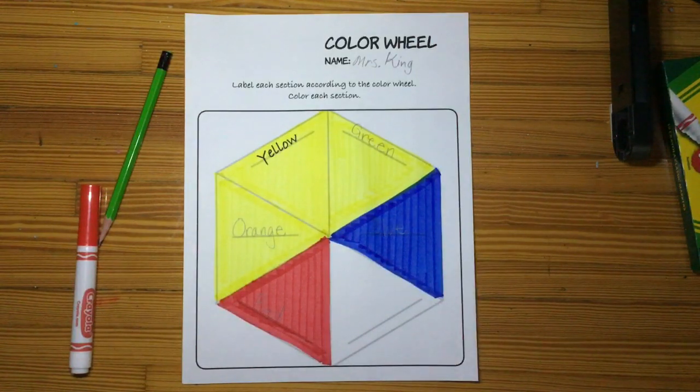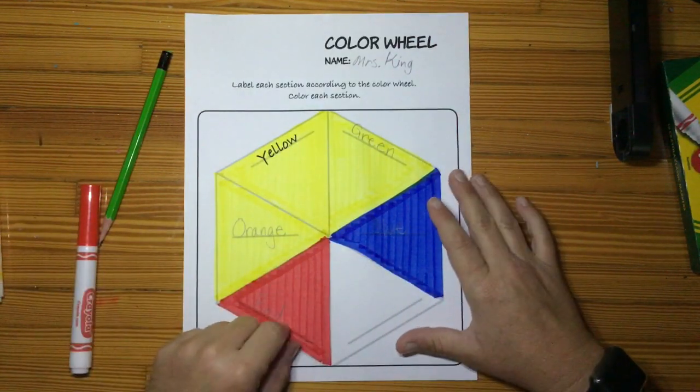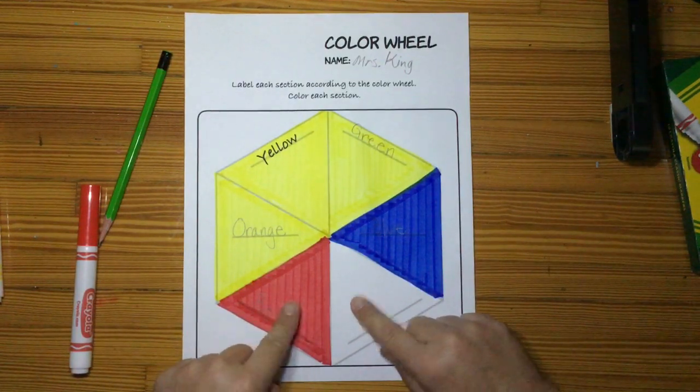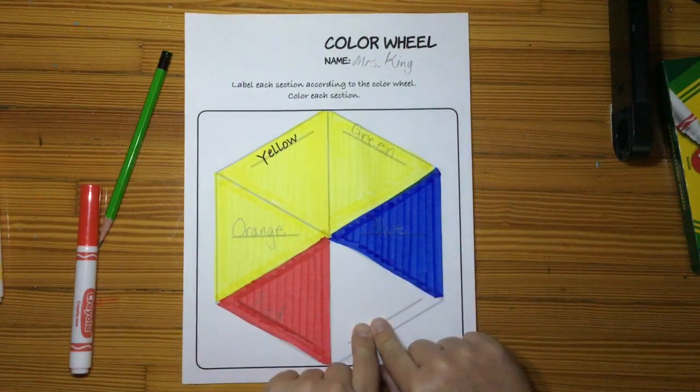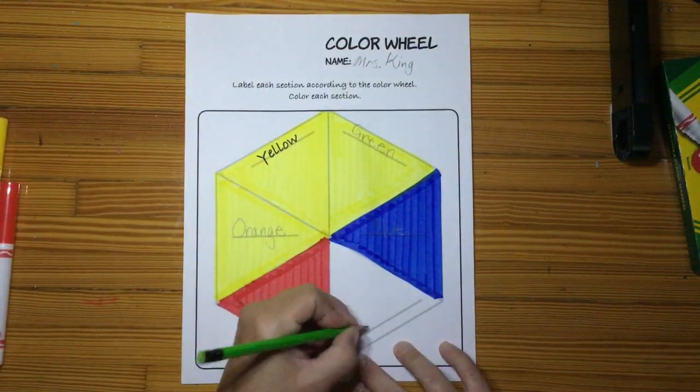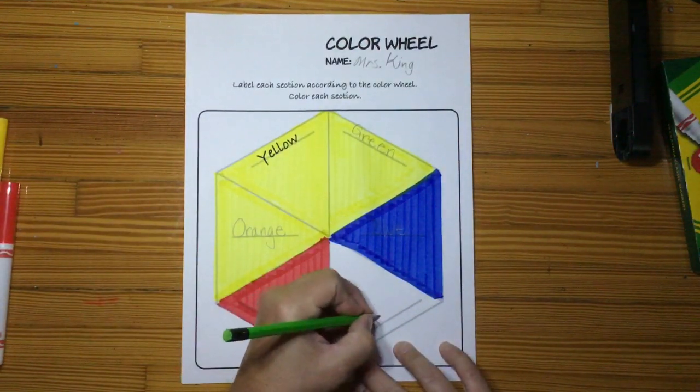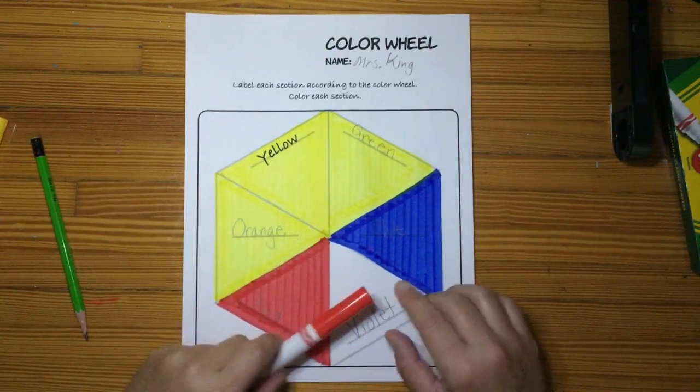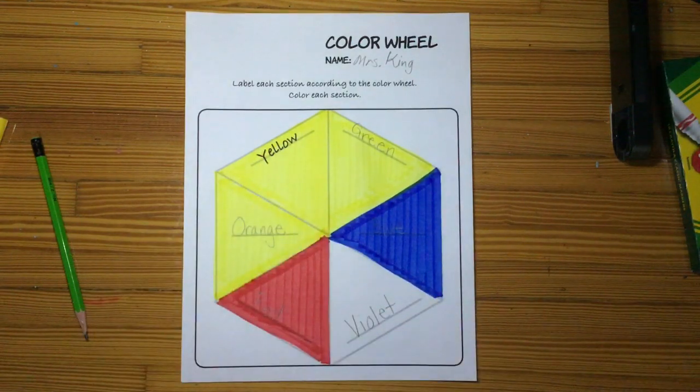We got those done. Now we did an experiment in class, and for violet, because red and blue make violet, we're going to start with red. But first, let's label V-I-O-L-E-T, violet. So I like to put a red marker underneath first.